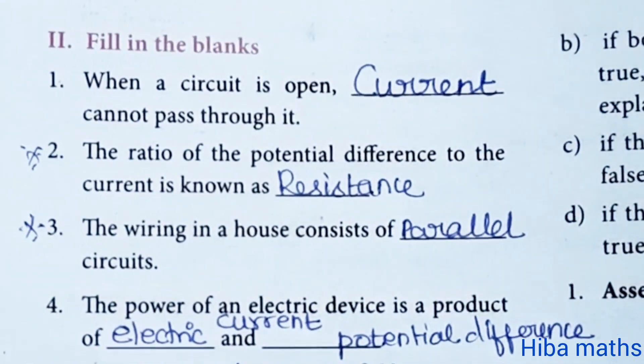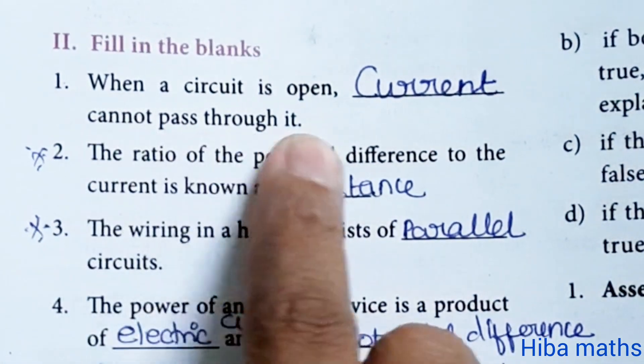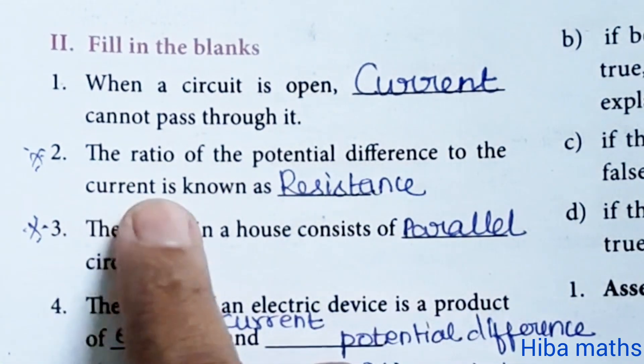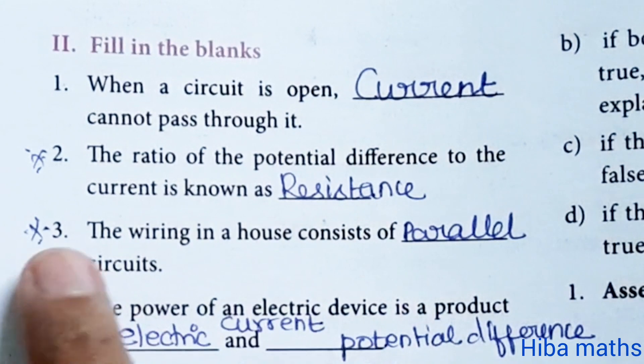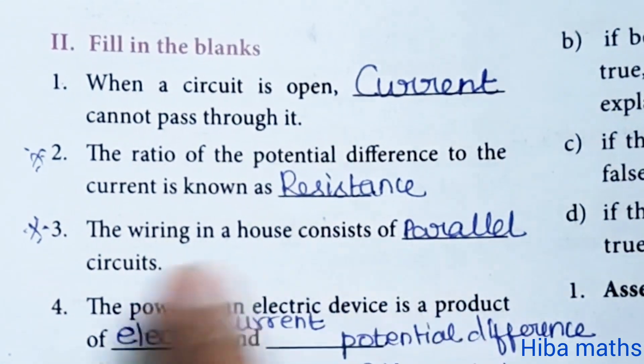Fill in the blanks. When a circuit is open, current cannot pass through it. Second question: the ratio of the potential difference to the current is known as resistance. Third question: the wiring in a house consists of parallel circuits.